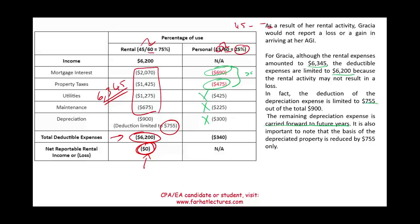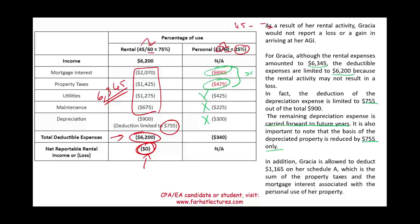The basis of the property is reduced by the $755 of depreciation taken, which will be relevant when discussing depreciation and cost recovery in a separate session. In addition, Garcia is allowed to deduct $1,165 on Schedule A, which represents the sum of the personal-use portions of the property taxes and mortgage interest associated with the property.